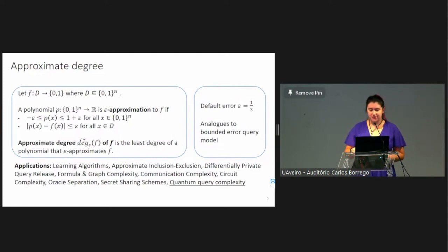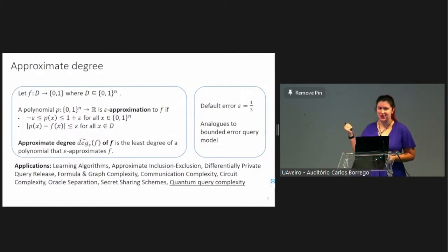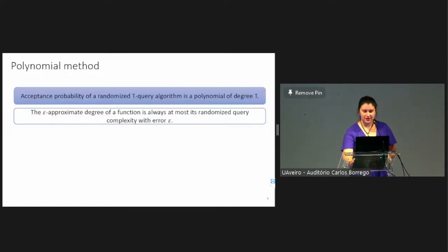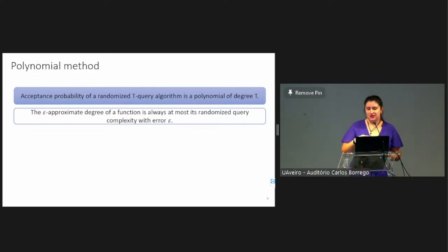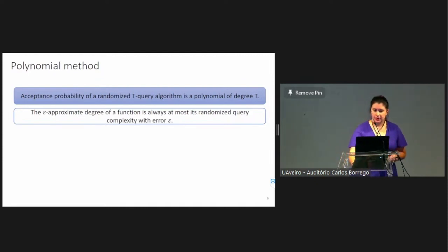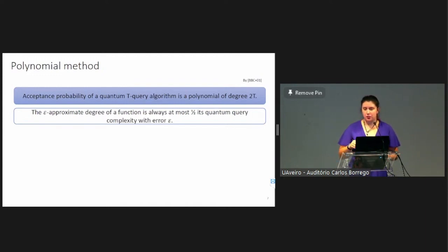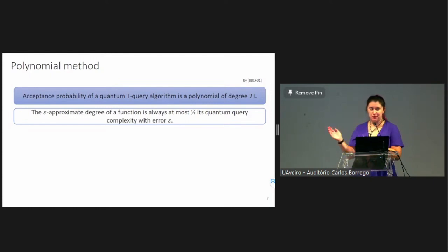There are a lot of different applications for approximate degree throughout theoretical computer science, but in this talk, since TQC, I'm going to focus on quantum query complexity. There is a fact that the acceptance probability of a randomized T-query algorithm is just out of the box a polynomial of degree T. So the approximate degree of a function is always at most its randomized query complexity. Similarly, the acceptance probability of a quantum T-query algorithm is a polynomial of degree 2T. So the approximate degree of a function is always at most one-half of quantum query complexity, which means if we prove lower bounds for approximate degree, we prove lower bounds for quantum query complexity as well.